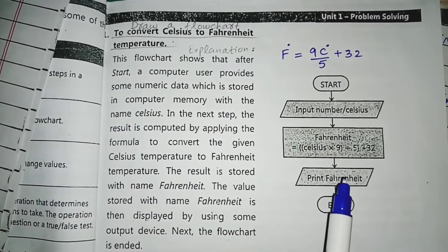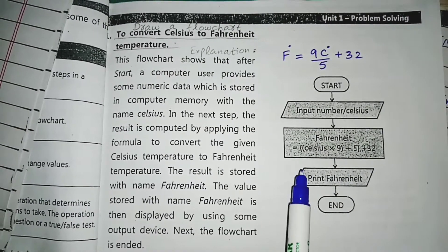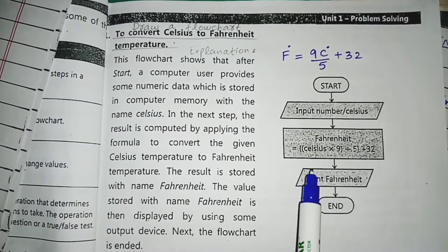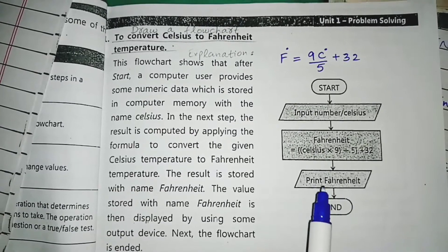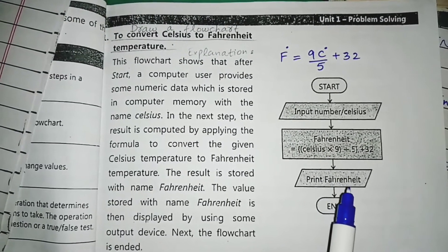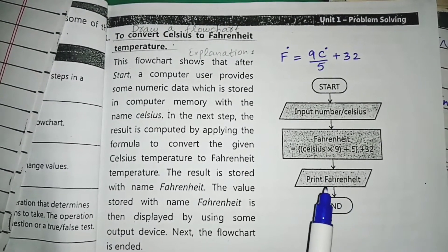After the processing, there is another parallelogram showing the output. We print the Fahrenheit temperature, and this flowchart ends.